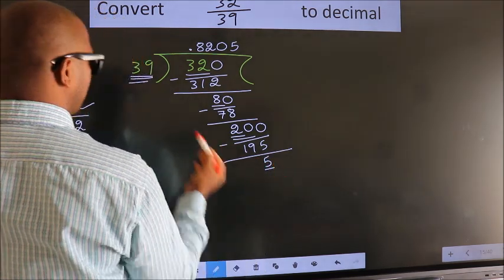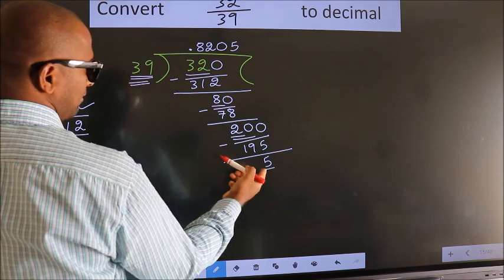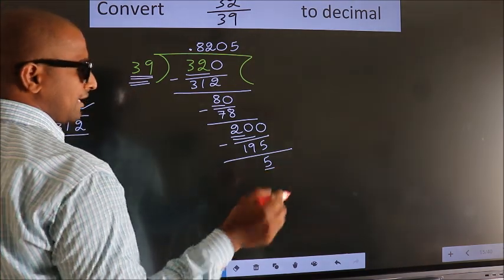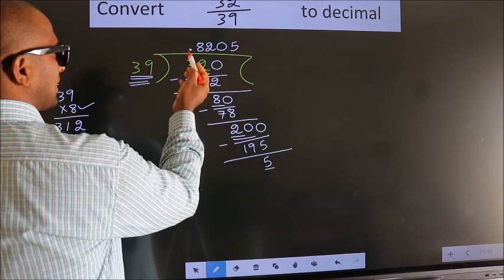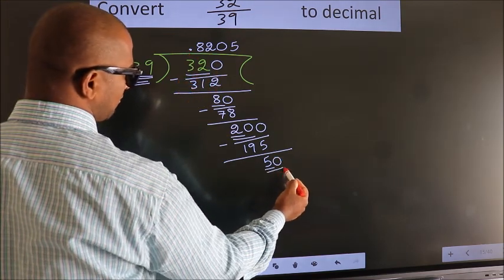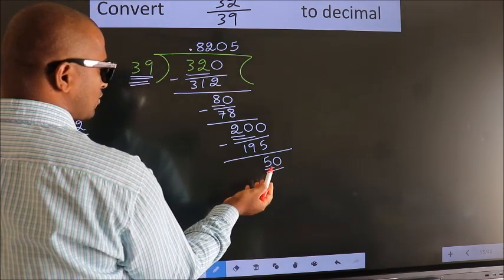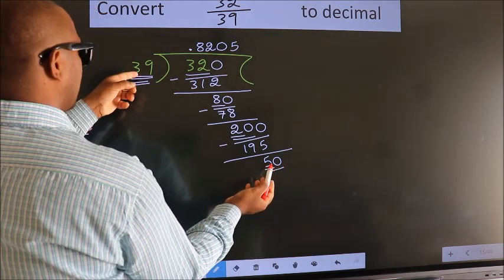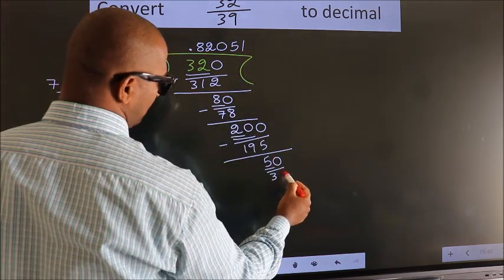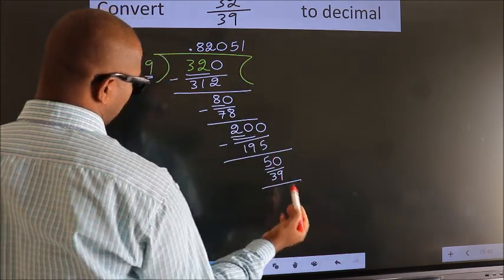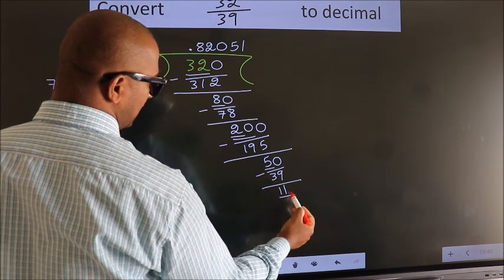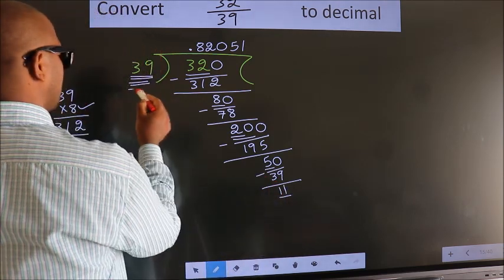Here we have 5. Here 39. 5 is smaller than 39, and we already have the decimal, so we can directly take 0. So 50. A number close to 50 in the 39 table is 39 times 1, which is 39. Now we subtract, we get 11. Here we have 11. Here 39.